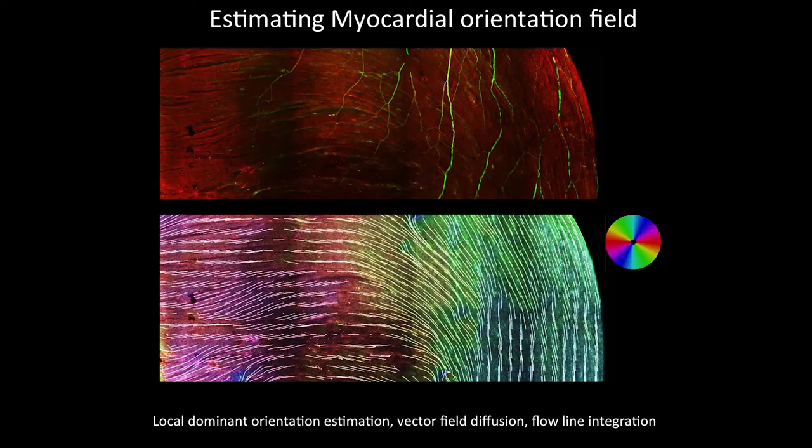If we could really map out those circuits in detail, then you could imagine analyzing what's going wrong — why do I have this particular arrhythmia — and saying it must be that this particular feedback signal is out of sync.